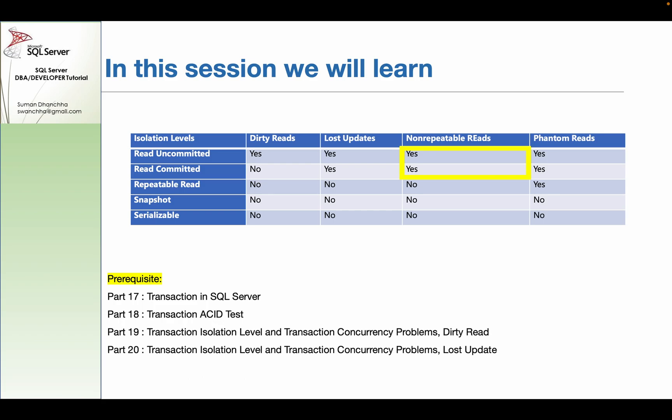If there are two big transactions that are executed in parallel, then the first time I read the data and the second time I read the data, I get a non-repeatable read.